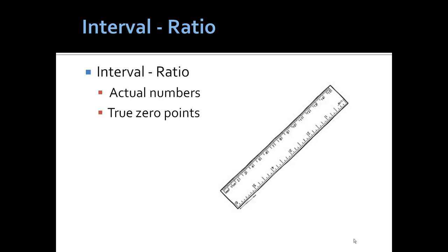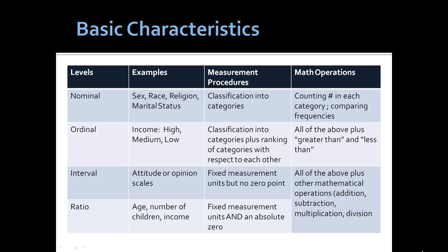Interval/ratio involves the use of actual numbers. A ratio scale differs from an interval scale in that it has a true absolute zero. Nominal categories such as sex, race, religion, and marital status use data analysis tools involving counting or comparing frequencies.